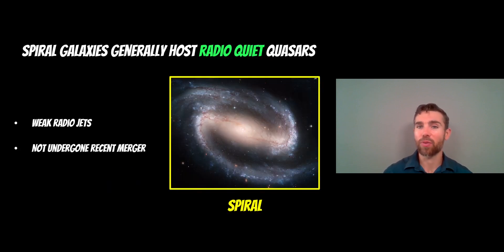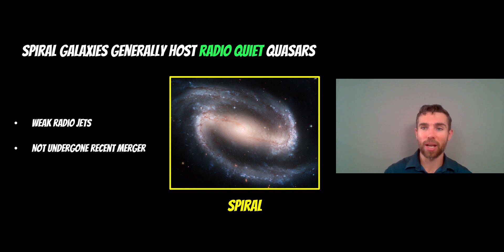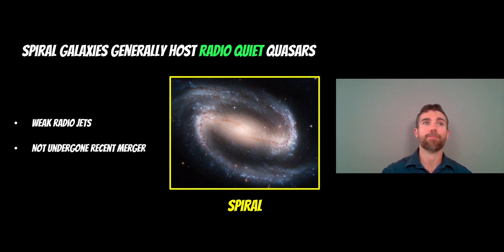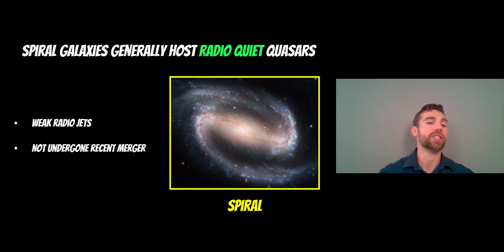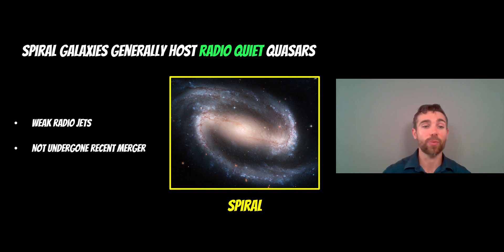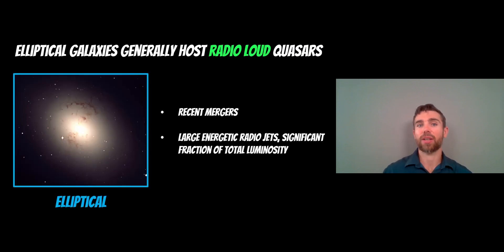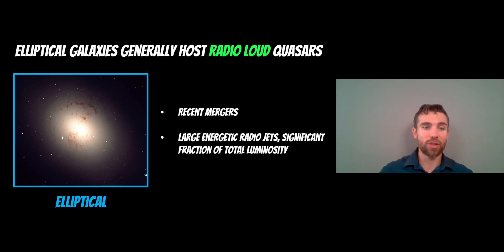This is important when we look at the quasar in the actual galaxy. Quasars hosted in spiral galaxies are typically radio quiet — a significant part of their total energy is not in the radio part of the spectrum, so they have fairly weak radio jets. We wouldn't see significant jets, but they would still have a very luminous central region from the accretion disc. Elliptical galaxies generally host radio loud quasars, meaning they have very large, significant jets that represent a significant fraction of their total luminosity. The reason for this is that elliptical galaxies may have undergone recent mergers, whereas spiral galaxies have not.